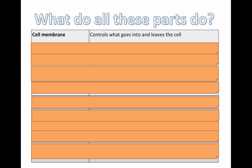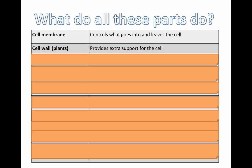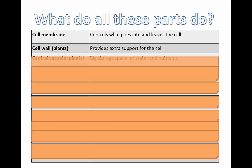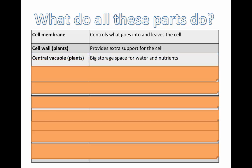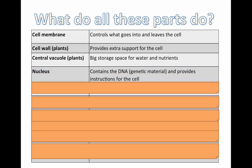What are these things and what do they do? The cell membrane controls what goes into and can leave the cell — it's kind of like a gatekeeper. The cell wall in plants provides extra support for the cell. The central vacuole, the big space in the middle of plant cells, acts as a storage space for water and nutrients. The nucleus for both types of cells contains the genetic material — DNA — which makes us who we are and gives the instructions for all living things.